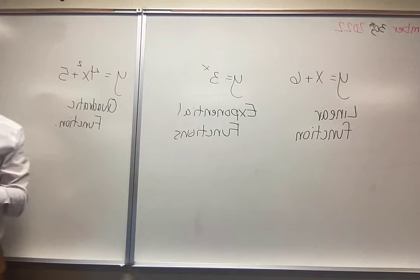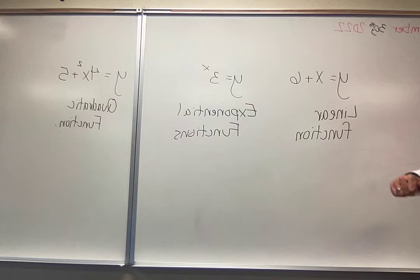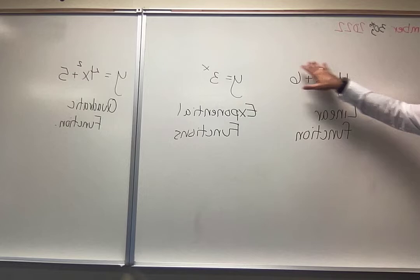There are three different ways that we can tell what we're dealing with. We can be looking at a graph, we can be looking at a table, or we can look at the equation. The equation itself tells us what we're dealing with.